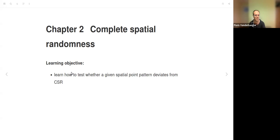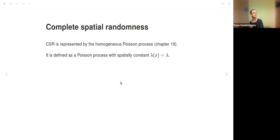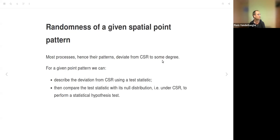Chapter 20 is about complete spatial randomness. The learning objective is how to test whether a given spatial point pattern deviates from complete spatial randomness. Complete spatial randomness is represented by the homogeneous Poisson process, defined as a Poisson process with spatially constant intensity λ. Most processes and patterns deviate from CSR to some degree.